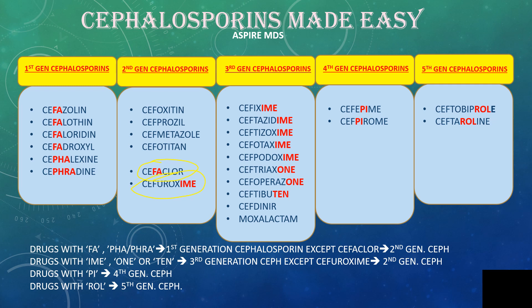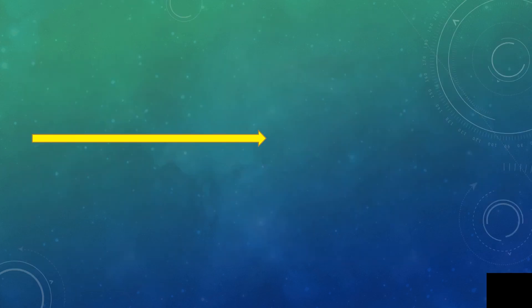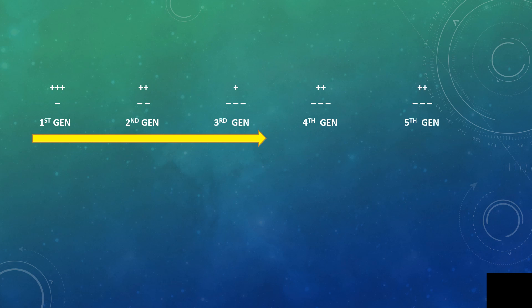Now let's talk about the bacterial spectrum and how they function. You can draw three arrows going from first to second to third generation. The first generation works more on gram-positive bacteria — Staphylococci, Streptococci, and even E. coli — and less on gram-negative bacteria. The second generation works more on gram-negative and less on gram-positive. The third generation is even more functional on gram-negative and lesser on gram-positive. The fourth generation again targets gram-negative spectrum but is still better than the third generation.